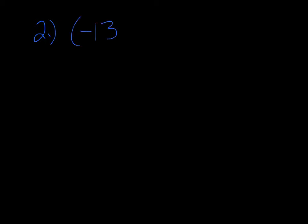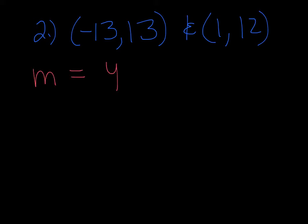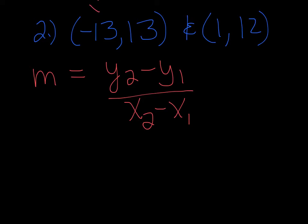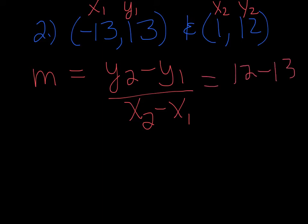Number two says find the slope of the line that goes through the points negative 1, 3, 13 and 1, 12. So m is equal to y2 minus y1 over x2 minus x1. Let's label these x1, y1, and x2, y2. That means we have 12 minus 13 over 1 minus a negative 13, that's equal to negative 1 over 14.